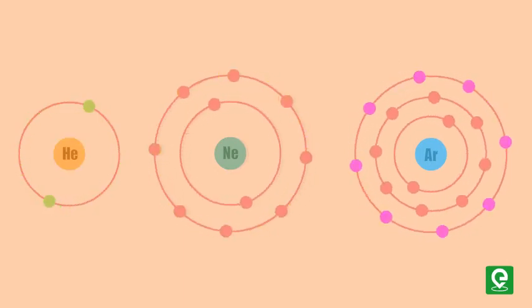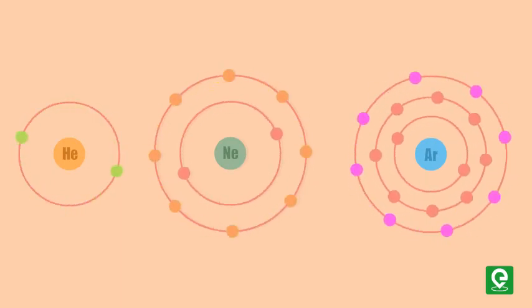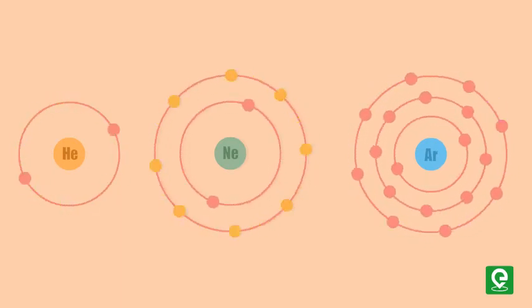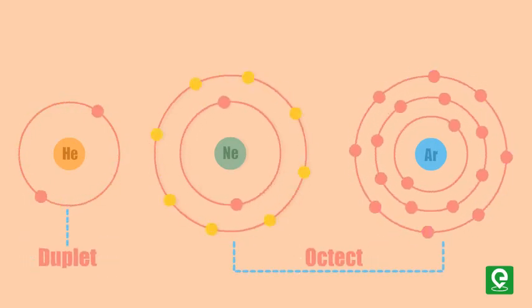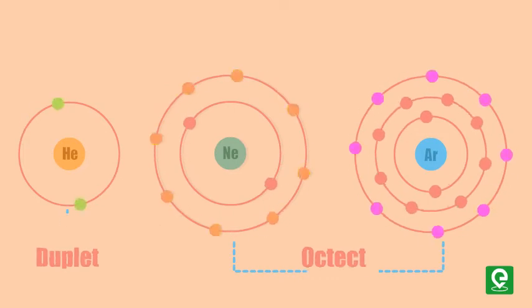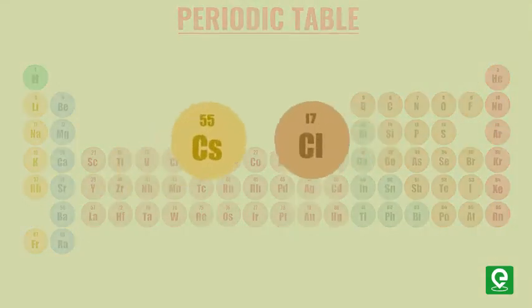Which is a duplet configuration. It is also stable due to fully filled valence s orbital. Octet and duplet configuration are considered to be stable in nature. Every other element tries to attain the configuration of the nearest inert gas, either by losing or by gaining electrons.